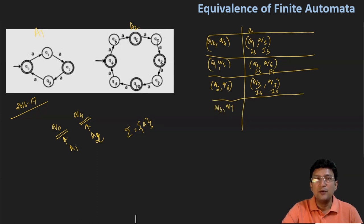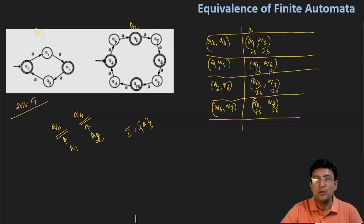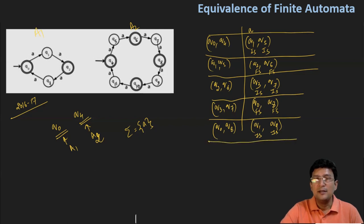The new pair generated from Q3 and Q7 is Q0 and Q8. By taking A in Q3, I move to Q0, and by taking A in Q7, I move to Q8. Q0 and Q8 are both final states in their respective automata — wait, Q1 and Q9: by taking A in Q0 I move to Q1, and by taking A in Q8 I move to Q9. Both are intermediate states, so there is no discrepancy and I can move ahead for more computation.